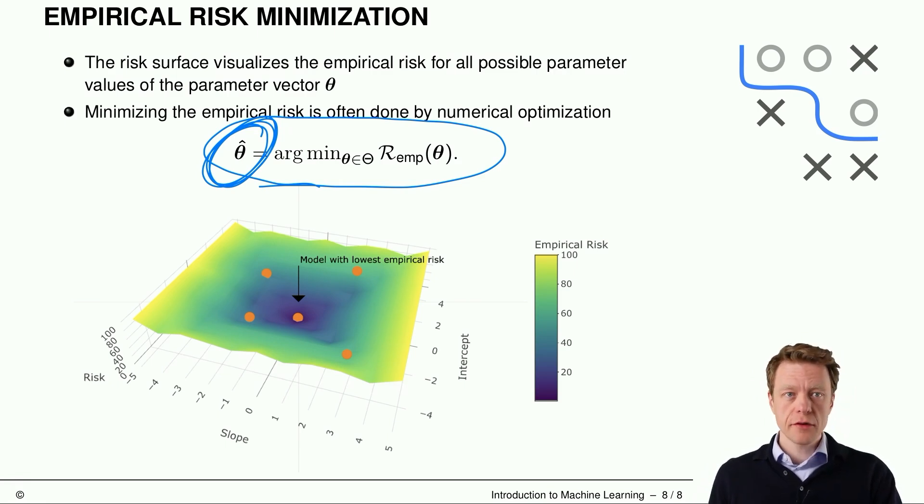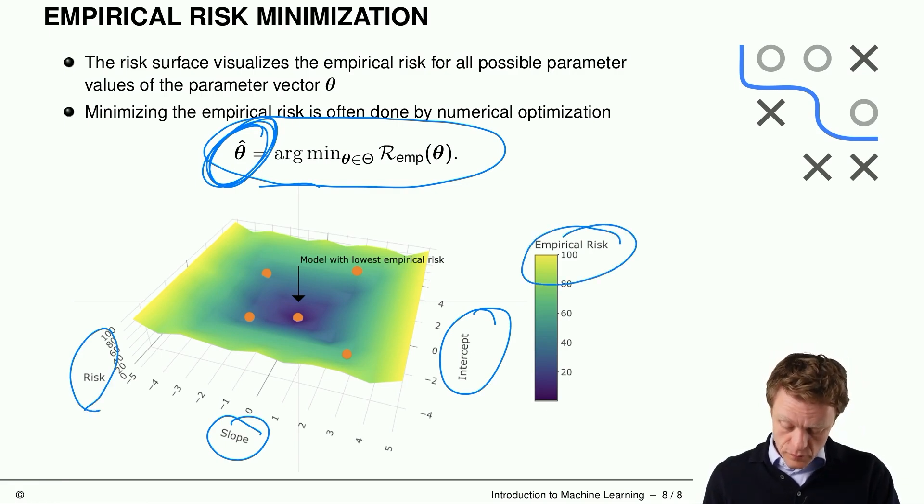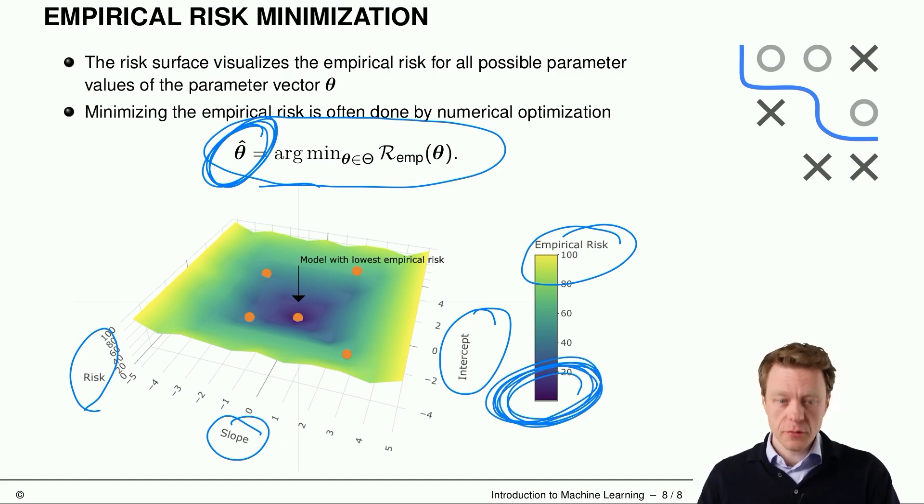And if you look at this figure here, we have the slope and the intercept of this linear model. So theta 0 and theta 1. And on the third axis, the risk. High risk is bad. We want to have a low risk. So in this color spectrum here. What we try to find is exactly this model here. Or this combination of slope and intercept. Because that's the global minimum of the risk surface. So the model with the lowest empirical risk. And, well, the result of our learning algorithm.